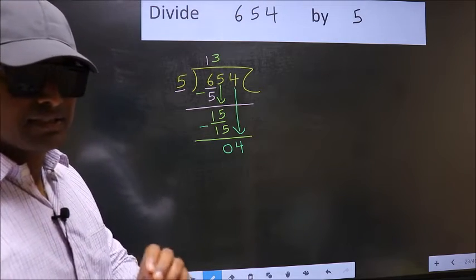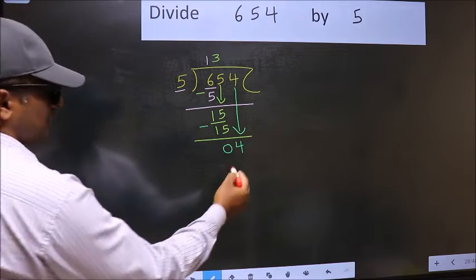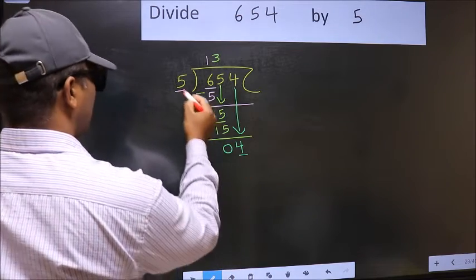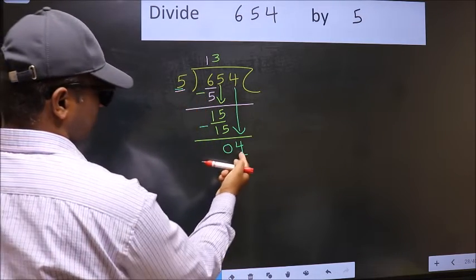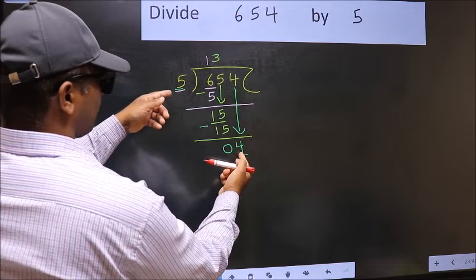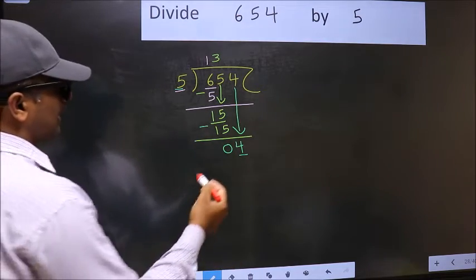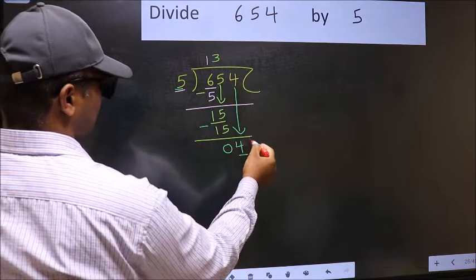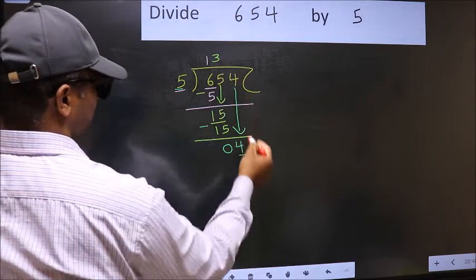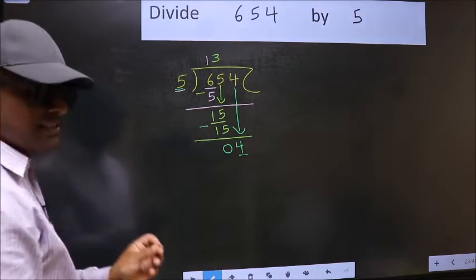And the mistake is this. Here we have 4 and here 5. 4 is smaller than 5. So what many do is they directly put dot and take 0, which is wrong.